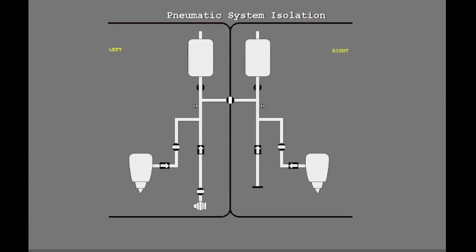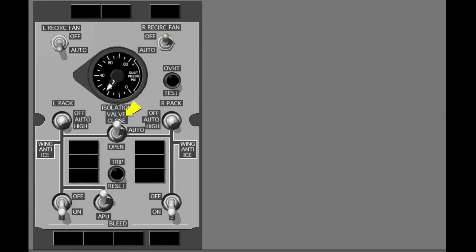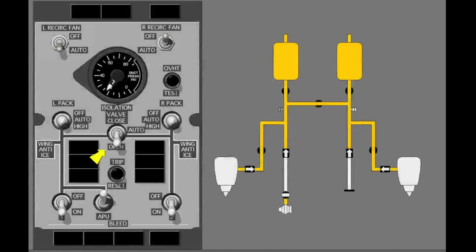The isolation valve separates the left and the right sides of the bleed air system. The isolation valve switch has three positions: closed, auto, and open. When the switch is in the open position, the valve is always open and the left and right sides of the bleed air system are connected. When the switch is in the closed position, the isolation valve is always closed and the left and right sides of the bleed air system are separated or isolated.